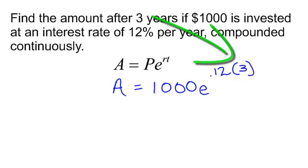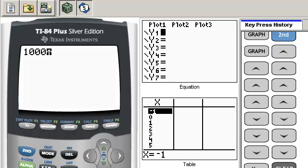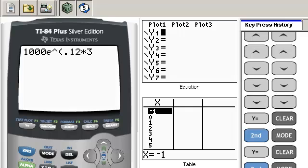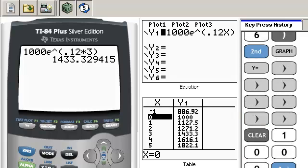Now I just go to my handy dandy calculator. So in my calculator I am typing in 1000 and then find your e button. It is under the LN, the natural log, so the second LN button. e to the, and I have 0.12 times 3, close the parentheses, hit enter, and it looks like after three years I will have $1,433.33.